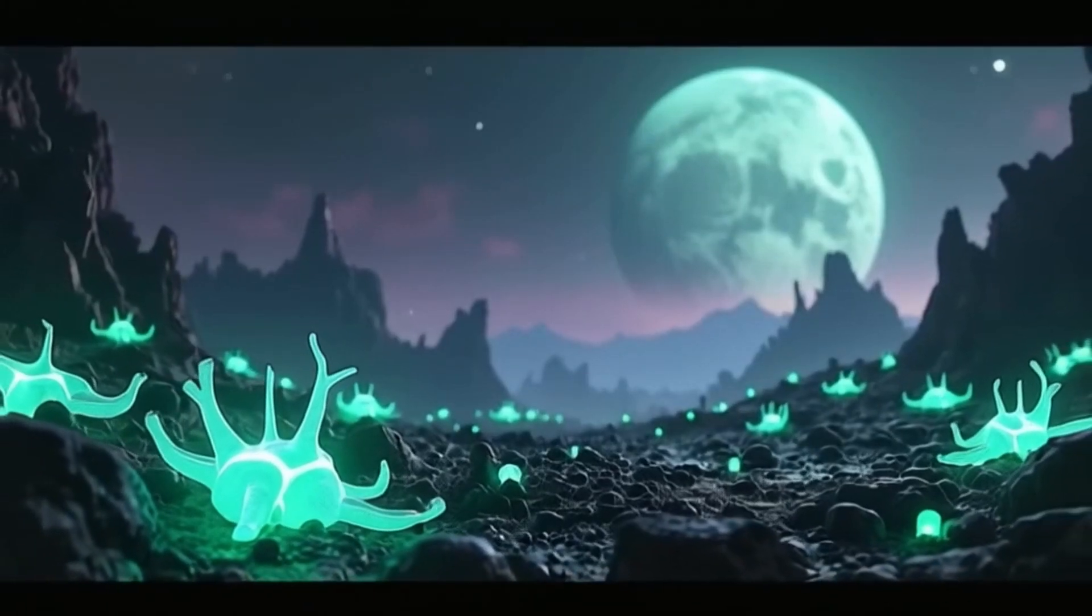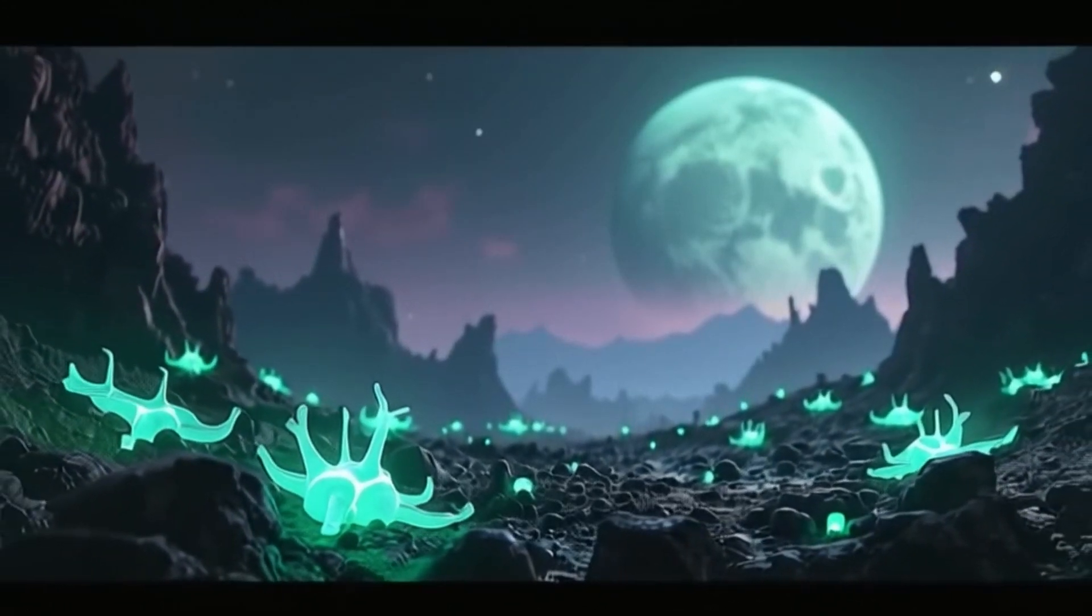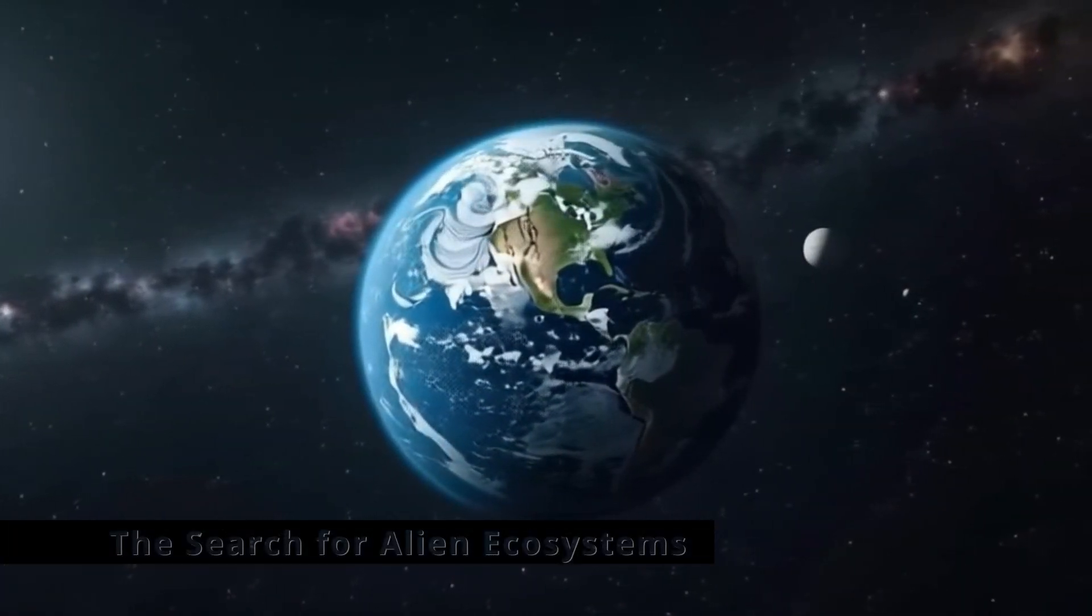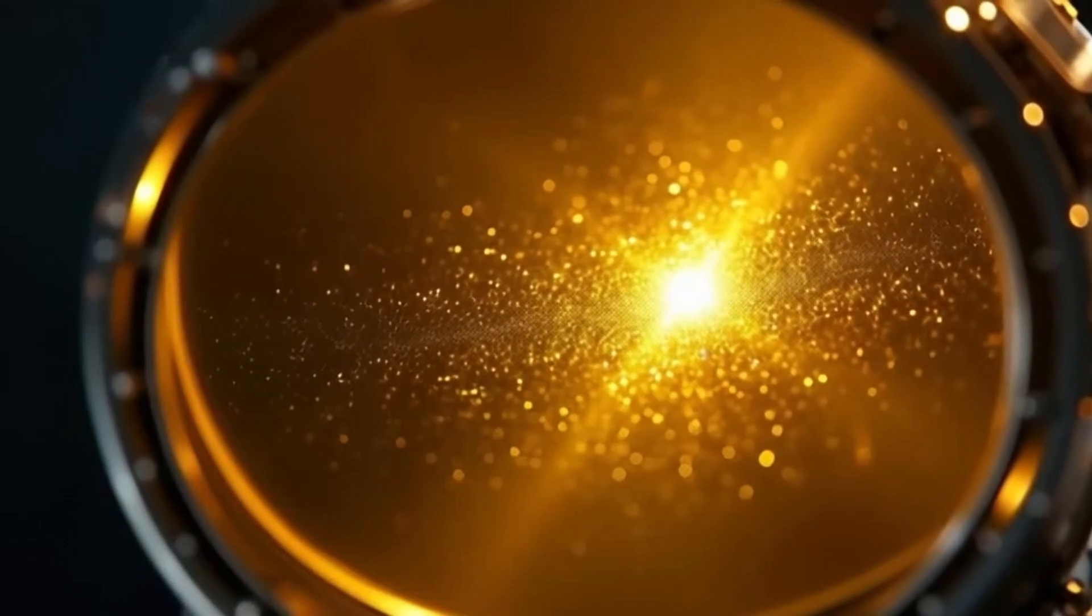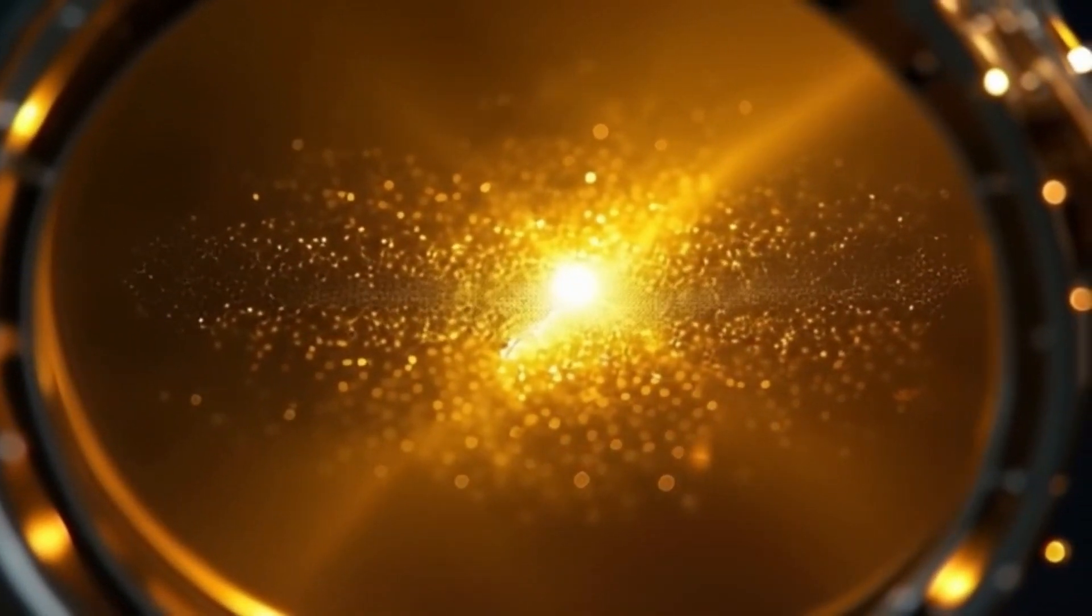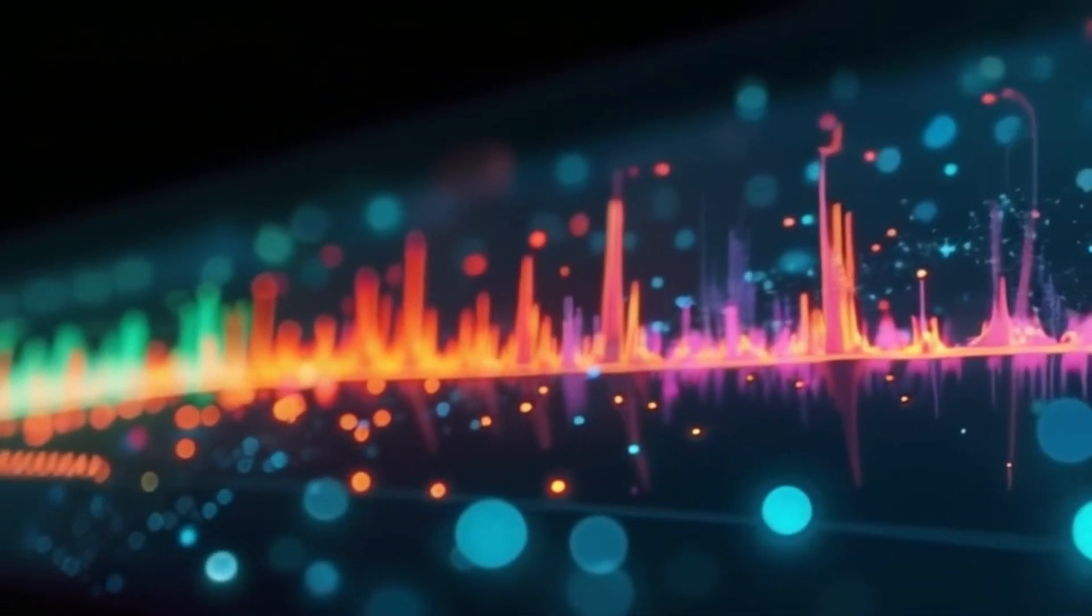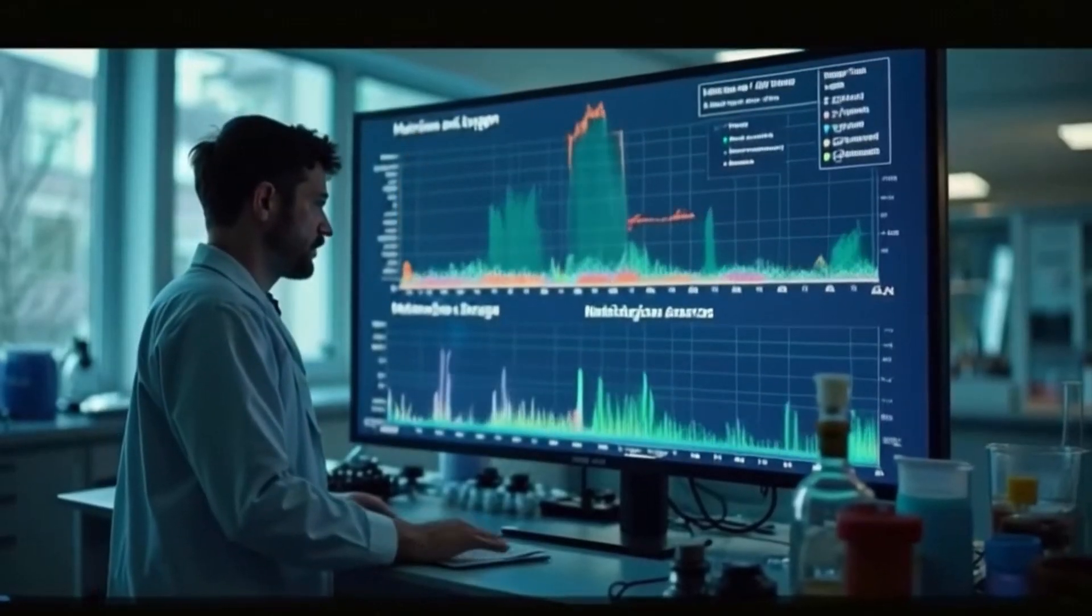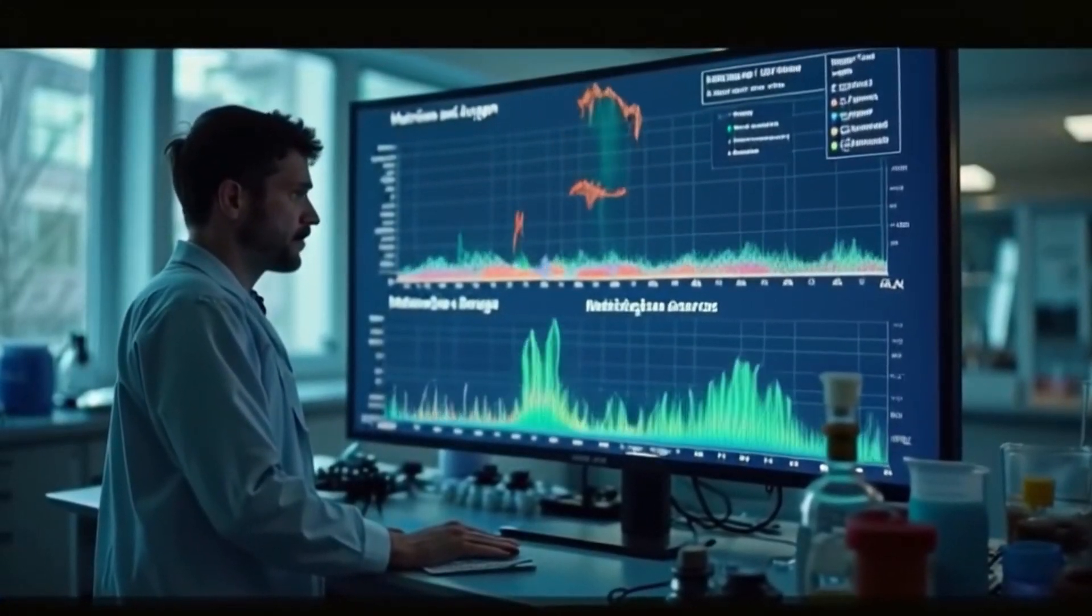As we continue our search, we may find life thriving in the most unexpected places, so alien that it challenges everything we know. For centuries, humanity has gazed at the stars, wondering if we are alone. The search for alien ecosystems is no longer just a dream. The James Webb Space Telescope is revolutionizing the search for alien life by analyzing exoplanet atmospheres for biosignatures. By studying light passing through exoplanet atmospheres, Webb can detect gases like oxygen and methane, potential signs of life. Finding biosignatures is promising, but distinguishing them from non-biological sources is one of astrobiology's greatest challenges.